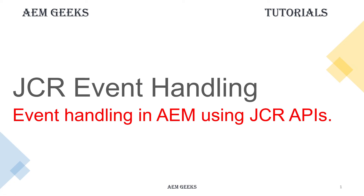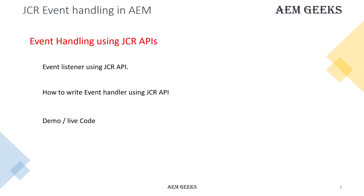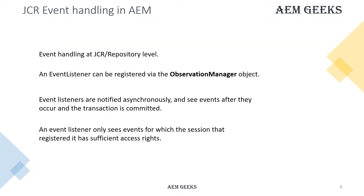In this tutorial I'll talk about event handling using JCR event handling APIs — how you can write an event listener, and then we'll have a demo with different use cases. This event listener is used for listening to events at the JCR or repository level, meaning listening to events at the node level. This listener can be registered using the observation manager.